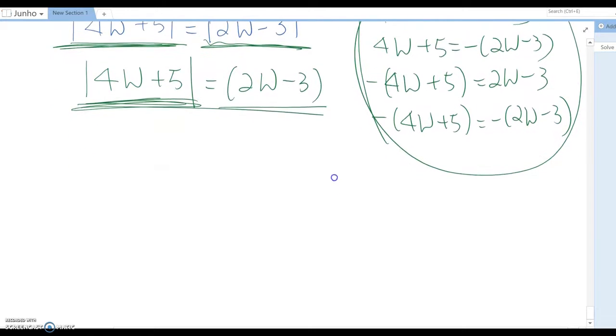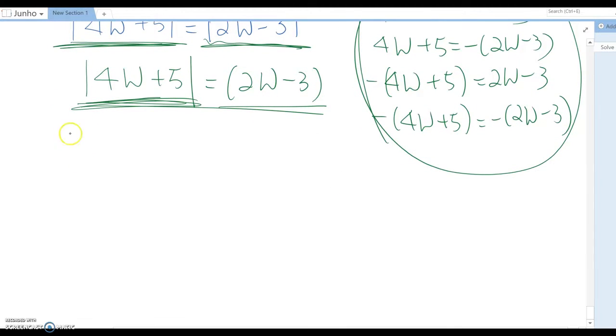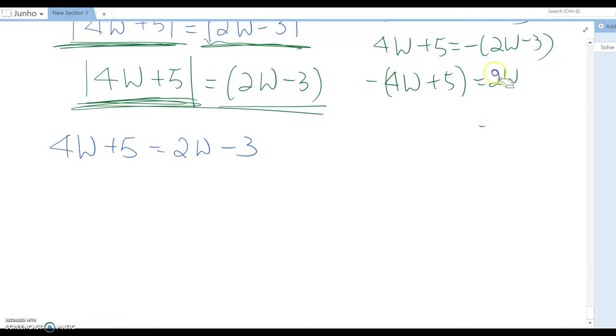Then you can make this equation 4w + 5 = 2w - 3, and then 4w + 5 = -(2w - 3).